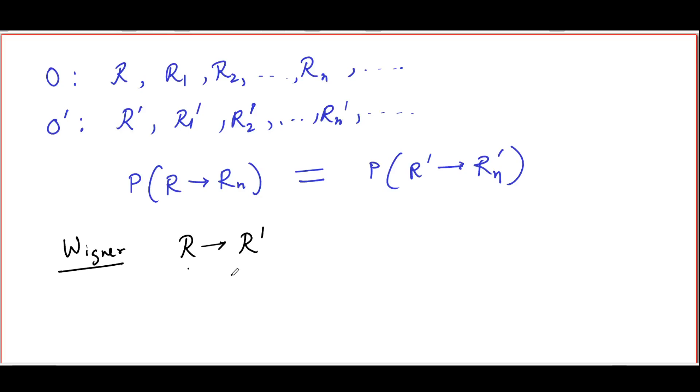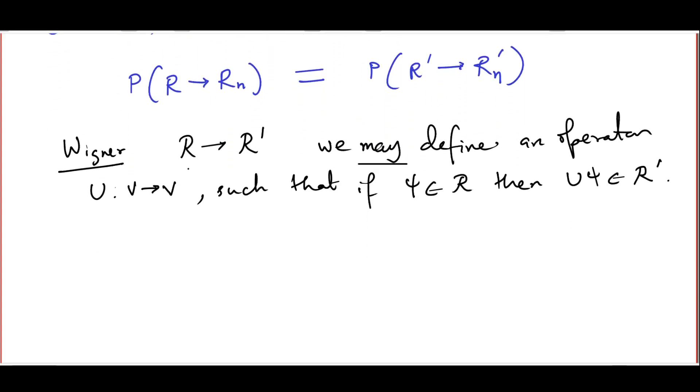Well, let us go back to Wigner's theorem. What Wigner actually proved was that we may define, and this is important, for any such transformation which carries R to R', we may define an operator U, which of course acts on the Hilbert space itself, it is a map from V to V, such that if chi belongs to R, then U chi, the result of applying the operator U on chi, belongs to R'. So you can actually implement this transformation by an operator U.